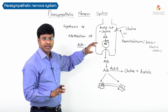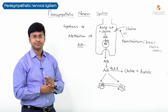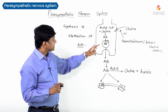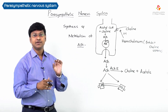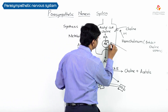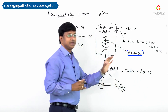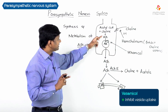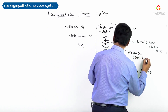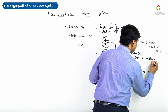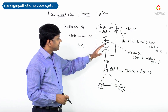Even if acetyl coenzyme A and choline combine to form acetylcholine, it must be taken up into vesicles. There is a drug called vesamicol which inhibits the vesicular uptake of acetylcholine, preventing its storage. This is the second step where acetylcholine synthesis can be inhibited.